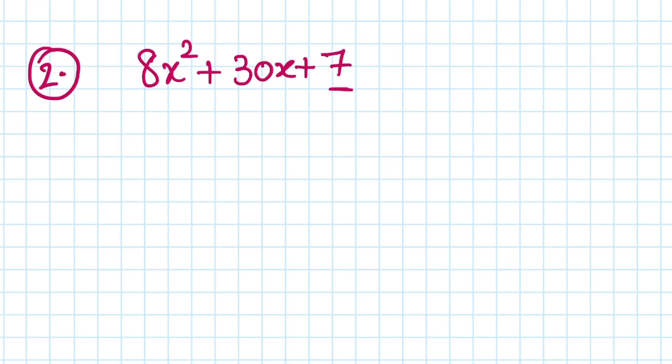So what we do is multiply the first and last number. We do 8 times 7, and that gives us 56. Now we find the factors of 56 that when added give us 30. Let's find factors of 56.